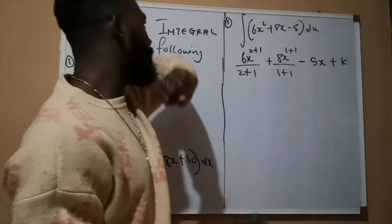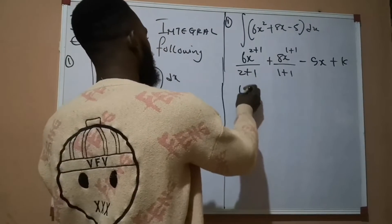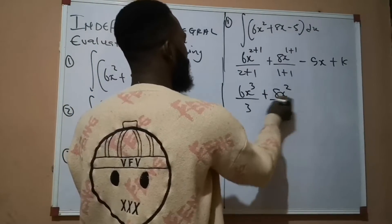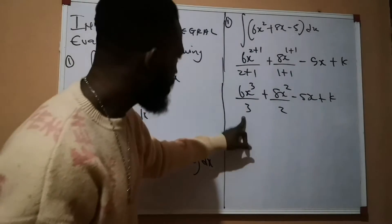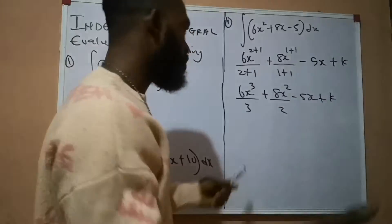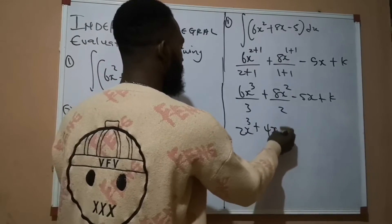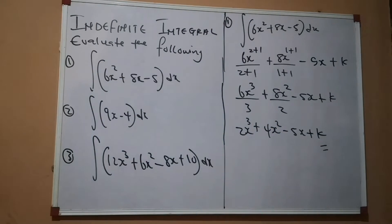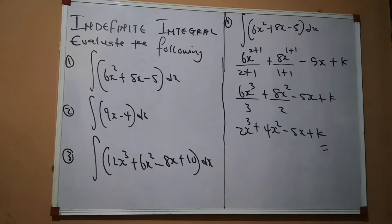There is a k because the question is an indefinite integral. Adding the powers: 2+1 = 3, so we have 6x³ over 3, plus 8x² over 2, minus 5x plus k. Now 3 divides into 6 to give 2, and 2 divides into 8 to give 4. So the final answer is 2x³ + 4x² − 5x + k. This is the answer when we integrate 6x² + 8x − 5 dx. That was clear and simple to understand.